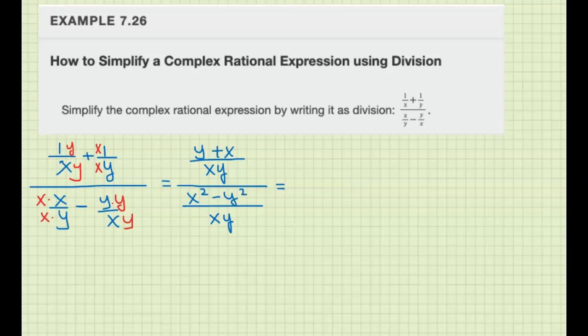All right, now we look at these, factor everything as much as you can, if possible. Okay, so the top we have x plus y. That doesn't factor. I'm just going to put it in parentheses over x y. All right, this one factors, because it's a difference of squares. So x plus y times x minus y over x y.